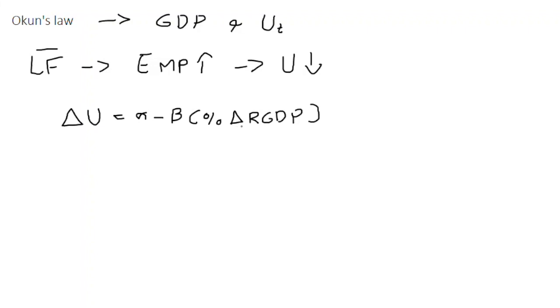So this is Okun's Law in empirical sense. The change in unemployment corresponds negatively to the percentage change in real GDP. It means that as real GDP increases, as physical output increases in the economy, then the unemployment rate should reduce.